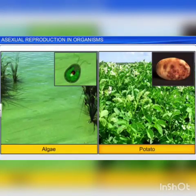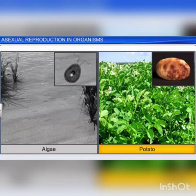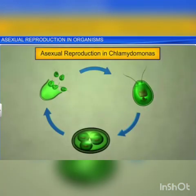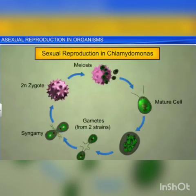Apart from single-celled organisms and animals, asexual reproduction is also seen in simple plants such as algae, as well as in certain higher plants such as potato. For instance, Chlamydomonas, a type of algae, develops zoospores which later mature into new plants. However, during unfavorable conditions, Chlamydomonas as well as other types of fungi and algae undergo sexual reproduction.